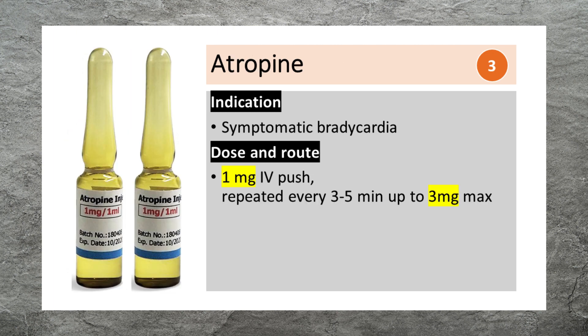Atropine is used to treat symptomatic bradycardia. It can be given as 1 mg IV push, repeated every 3-5 minutes up to a maximum of 3 mg.